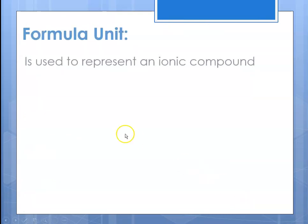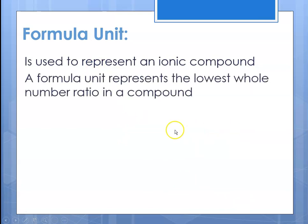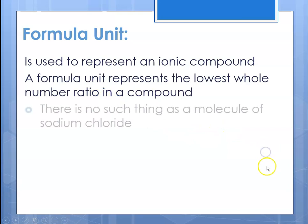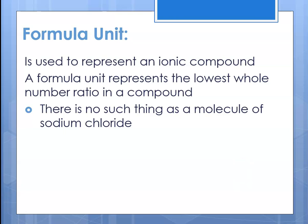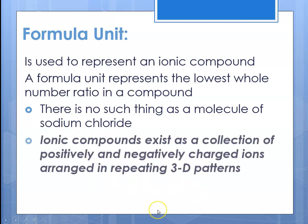The formula unit represents the lowest whole number ratio in that compound. There is no such thing as a molecule of sodium chloride, because it exists as a sodium ion and a chloride ion. It's because somebody gained the electron — chloride — and somebody lost the electron — sodium.